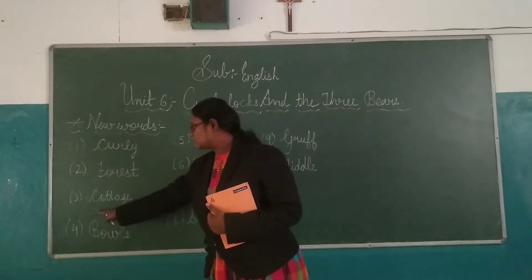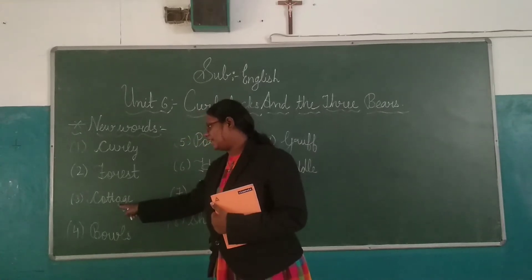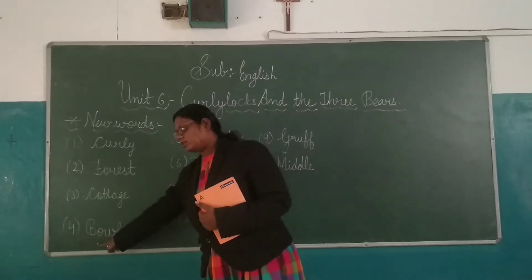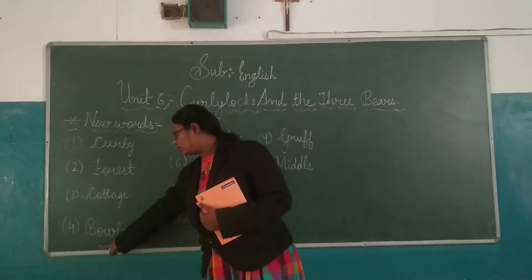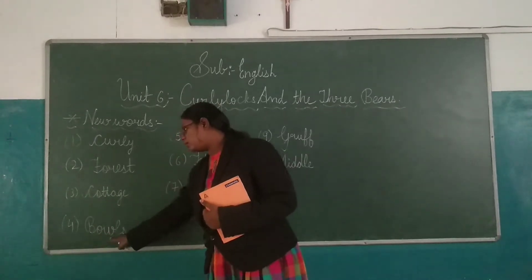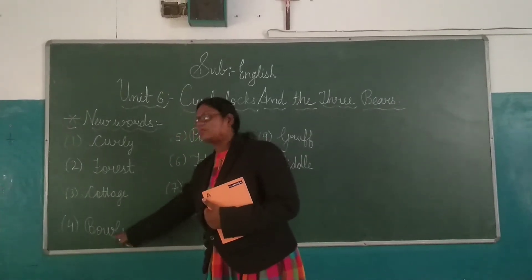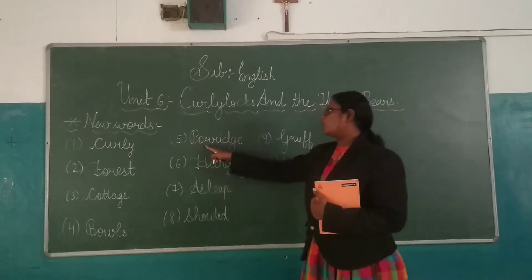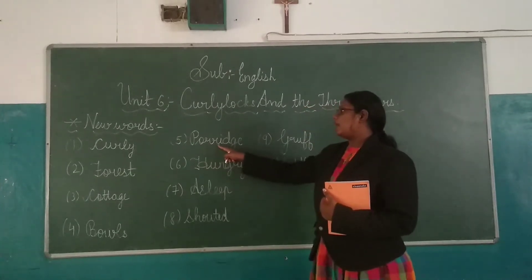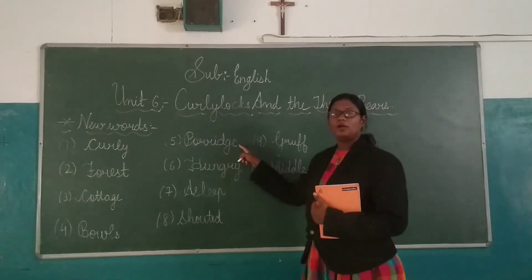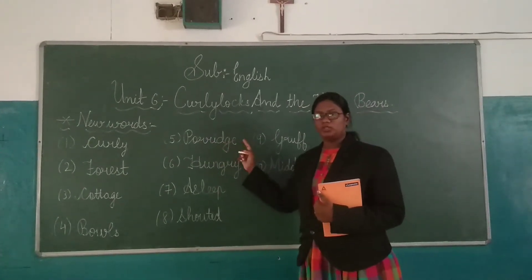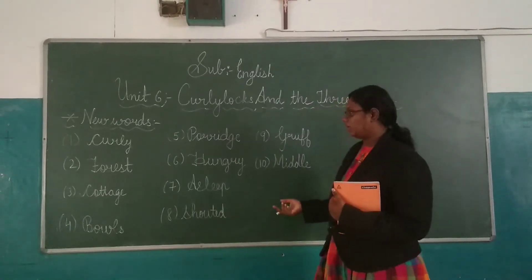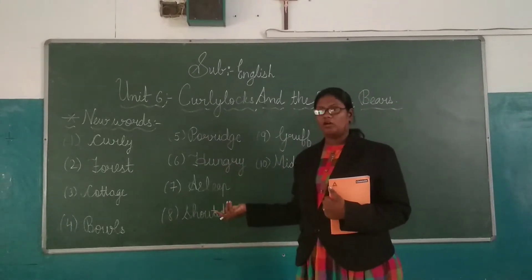Third word is Cottage — C-O-T-T-A-G-E, Cottage. Fourth word is Bowls — B-O-W-L-S, Bowls. Fifth word is Porridge — P-O-R-R-I-D-G-E, Porridge. Which means a type of food, we can call it Dalia also.